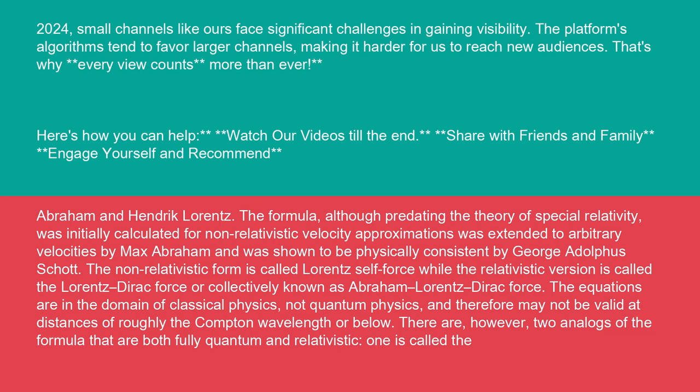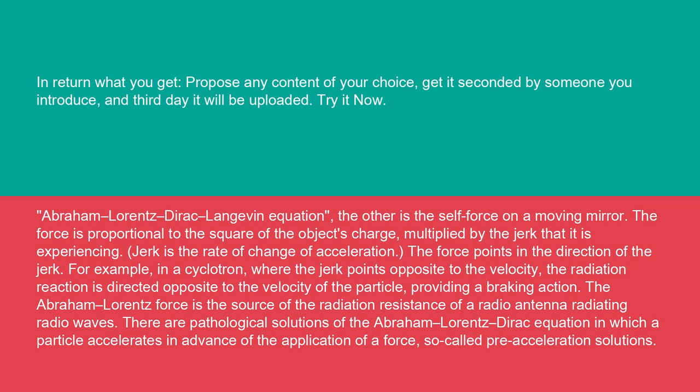The equations are in the domain of classical physics, not quantum physics, and therefore may not be valid at distances of roughly the Compton wavelength or below. There are, however, two analogues of the formula that are both fully quantum and relativistic. One is called the Abraham-Lorentz-Dirac-Langevin equation. The other is the self-force on a moving mirror.